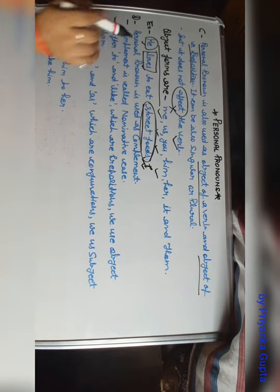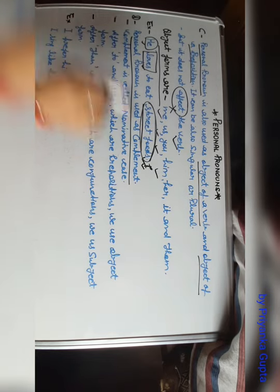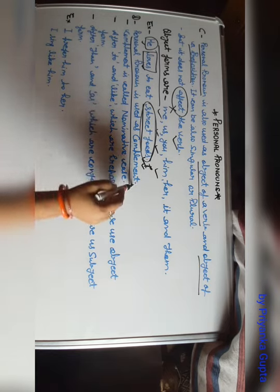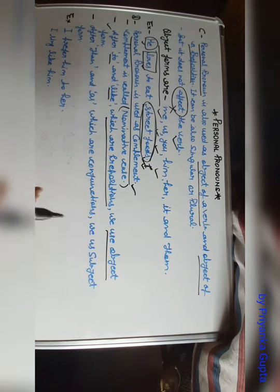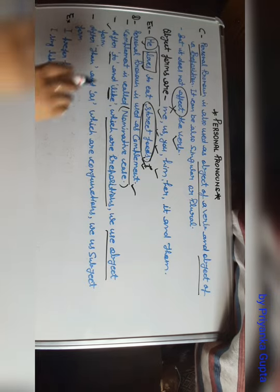Okay, come to the D point. D point is saying here personal pronoun is used as complement. Your personal pronouns are also used as complement, and this complement is called your nominative case. Let's see how does it use. After to and like, which are prepositions, we use object. Whenever we are using any complement as object, when you use these prepositions, that will be your object form.